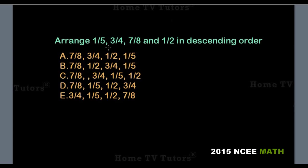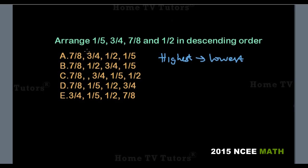Arrange these fractions in descending order — that means from the highest fraction to the lowest. The simplest way to do this is to convert the fractions to decimal numbers so you can clearly see which number is the highest.